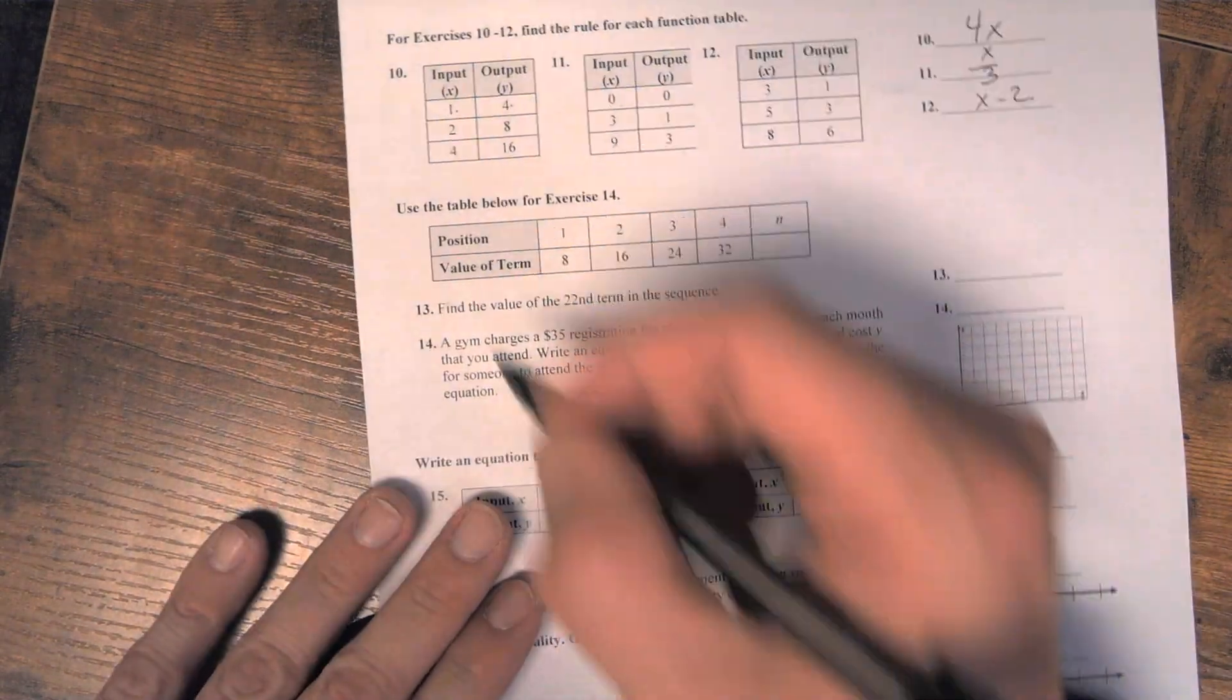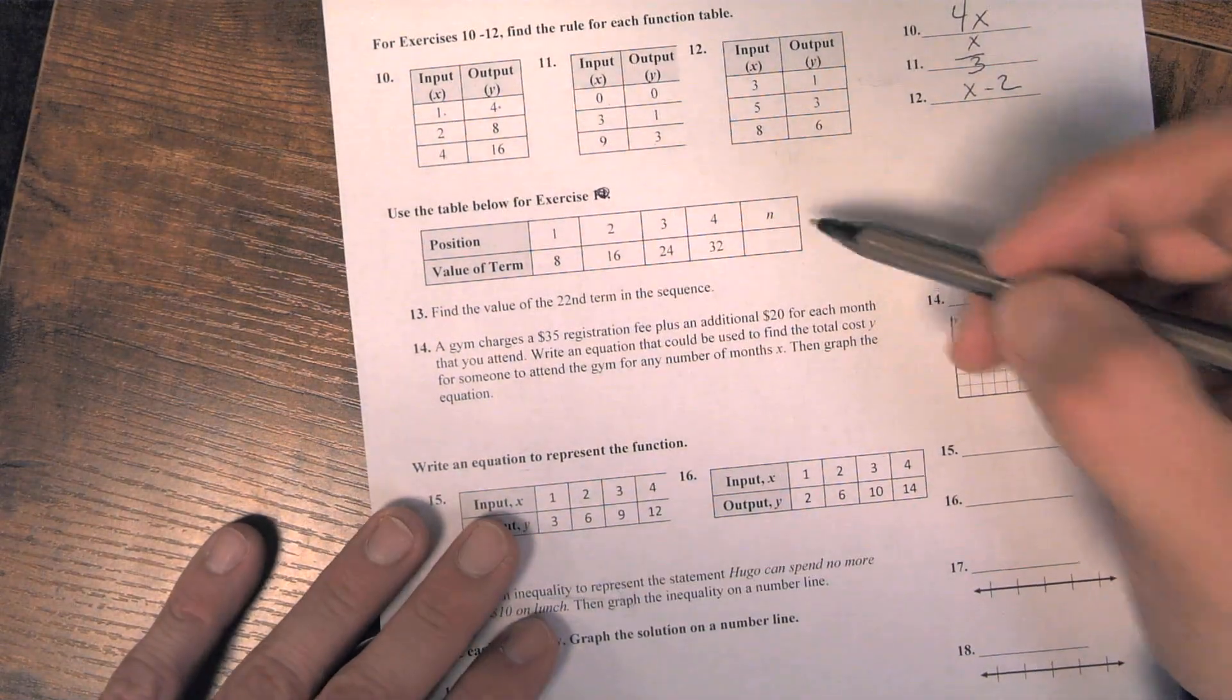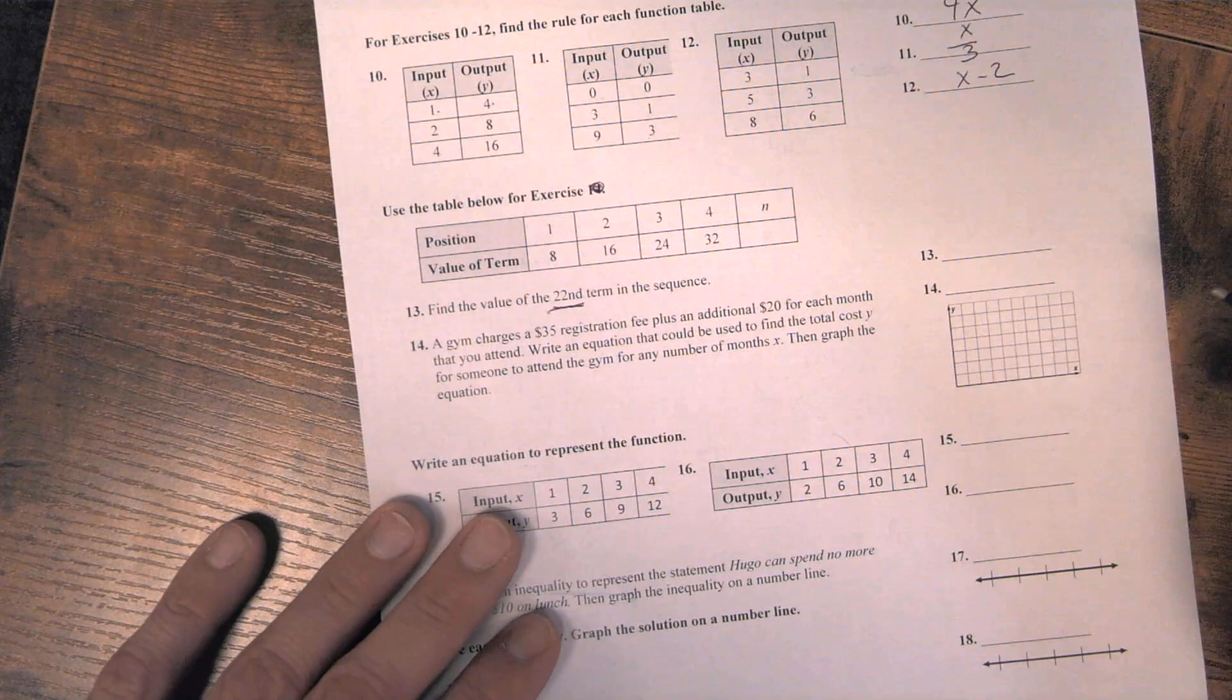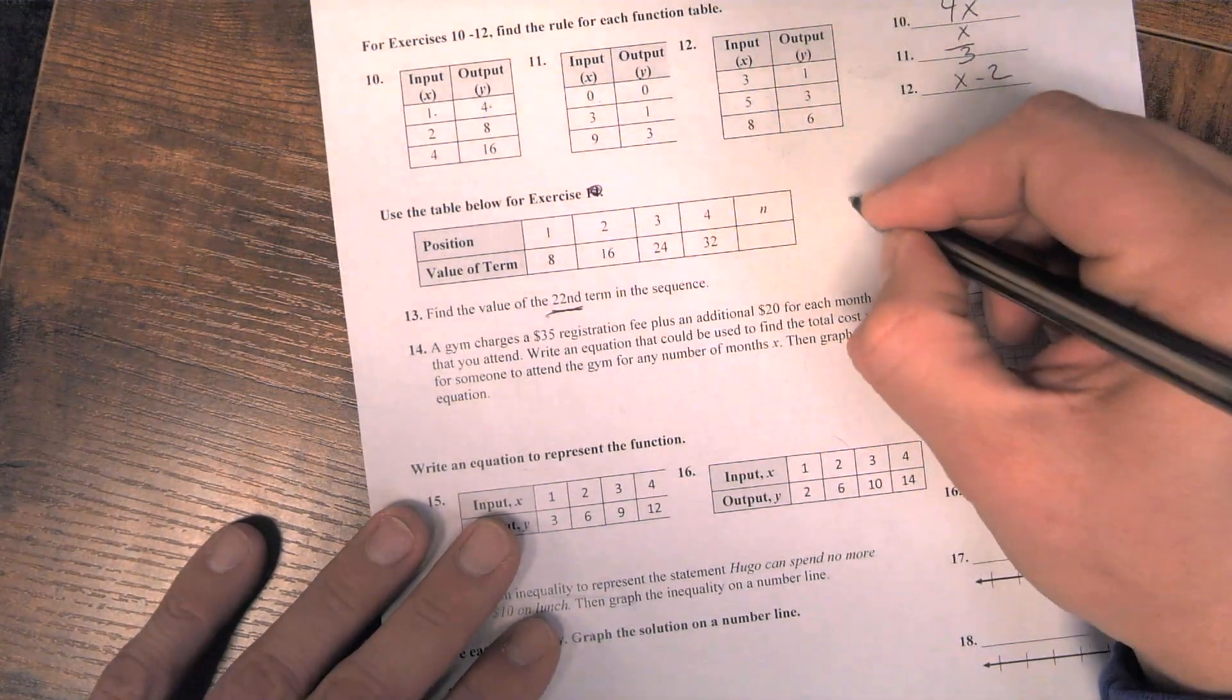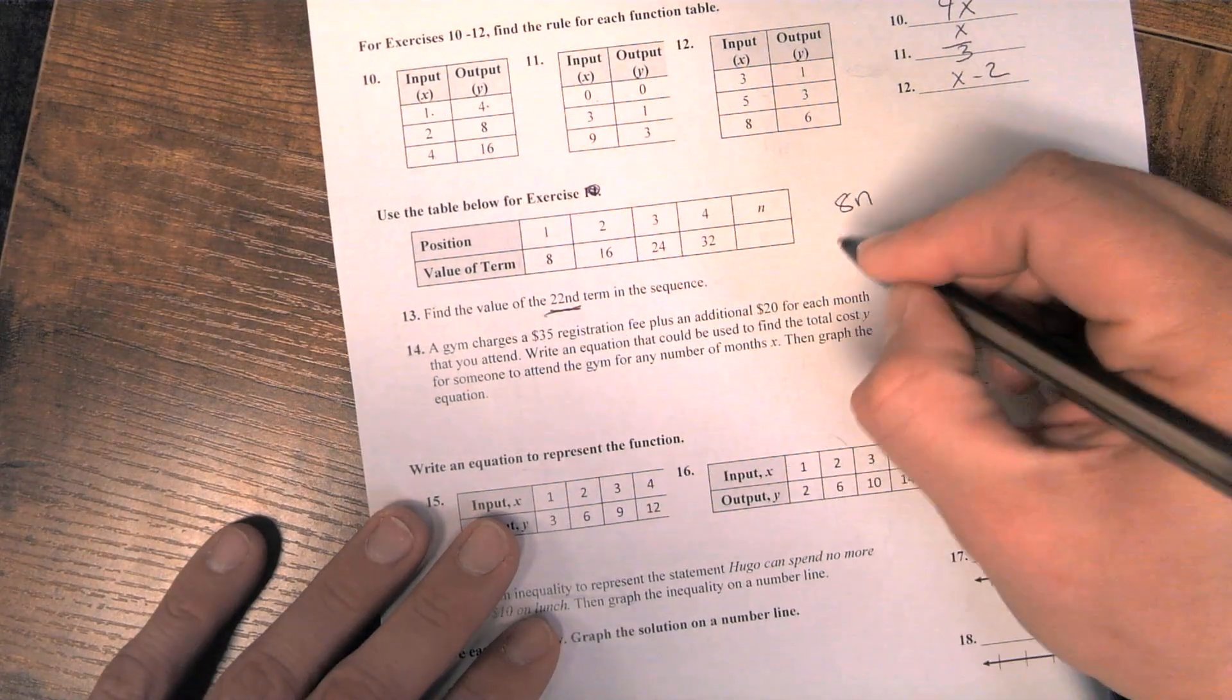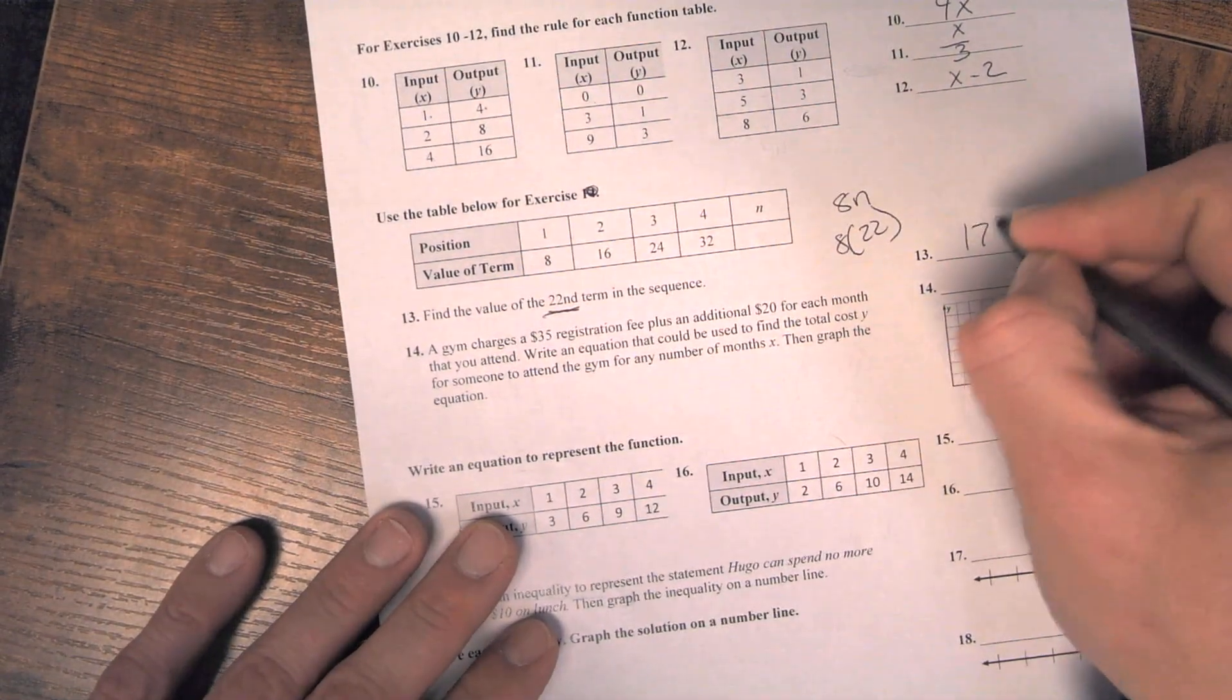For number 13, you're using the table. You've got to find the function rule first, then find the 22nd term. So they're going from 1 to 8, 2 to 16, 3 to 24. They're multiplying by 8. So to find the 22nd term, you multiply by 22. 176.